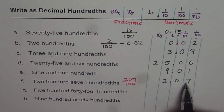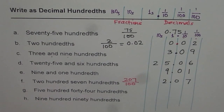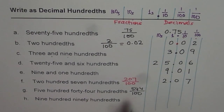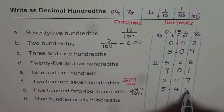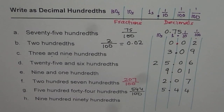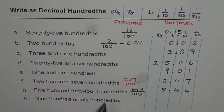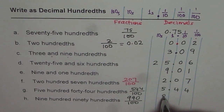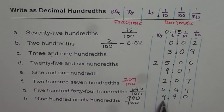Five hundred forty-four hundredths works the same way — it is 544 over 100, which gives you 5.44. Nine hundred ninety hundredths means 990 over 100, so that gives us 9.90. These last three problems can be tricky, so make a note of them and understand how the numbers expressed in words are converted to decimal numbers.